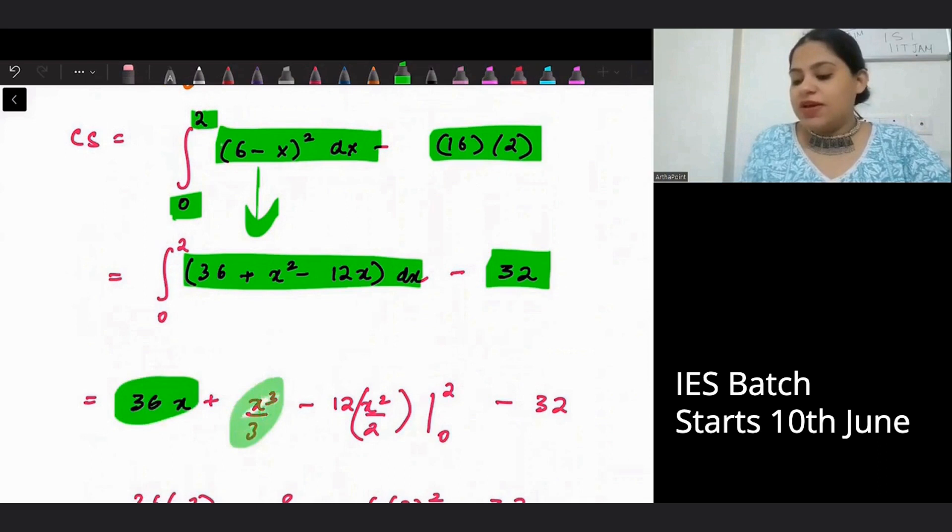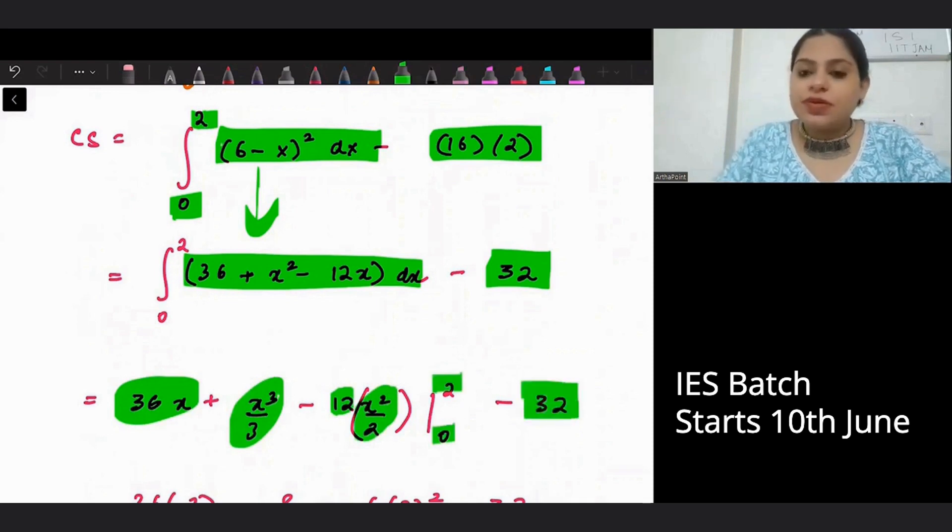Integration of 36 will be 36x. x square will be x cube by 3. 12x will be 12 into x square by 2. From 0 to 2 minus 32.